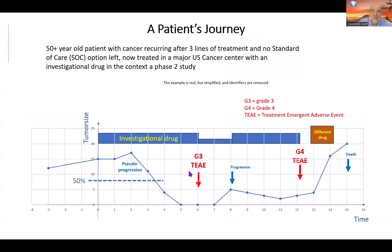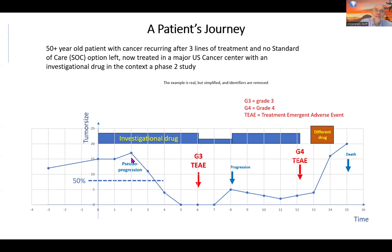Let's come to our patient journey. This is the story of a 50-year-old female patient who had cancer that recurred and had multiple lines of treatment. Before starting the drug, the tumor grew — that's what tumors do. Then our investigator started the drug. The tumor was the same in the beginning, and then it seemed to be a little bigger. This happens — it may be an artifact of imaging.